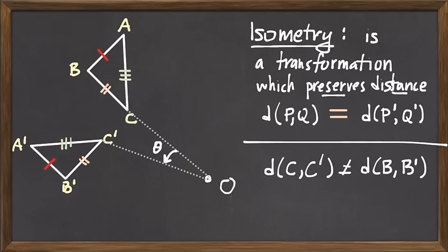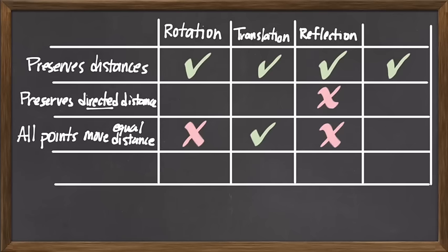Rotations are totally fine as far as preserving directed distances and preserving handedness and orientation — if I rotate my right hand, it's still a right hand. Rotations: yes. Translations: if I slide my right hand somewhere else, it preserves directed distance as well. So we have a sufficient set of differentiators: all isometries preserve distances. Among them, only reflections might not preserve directed distance. And only translations satisfy that all points move an equal amount of distance.